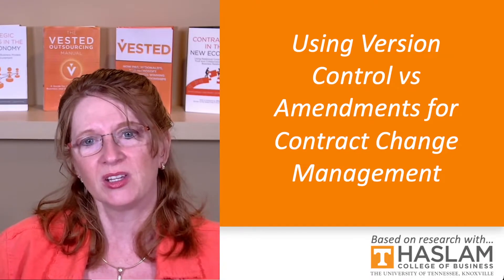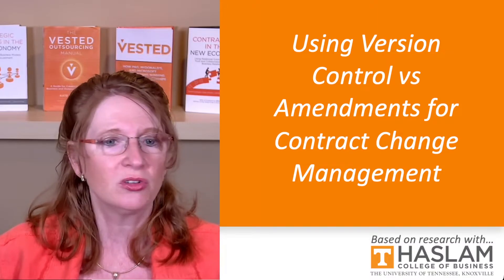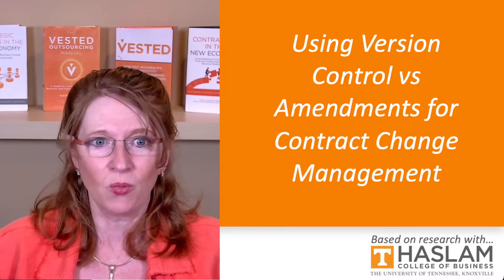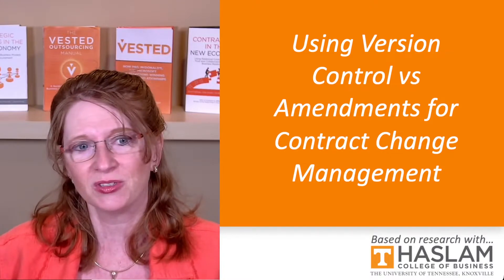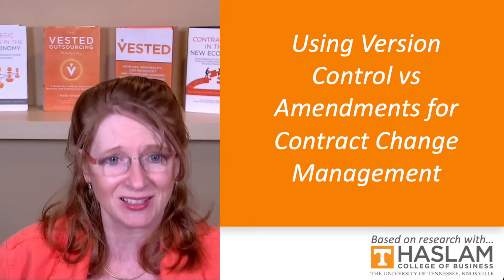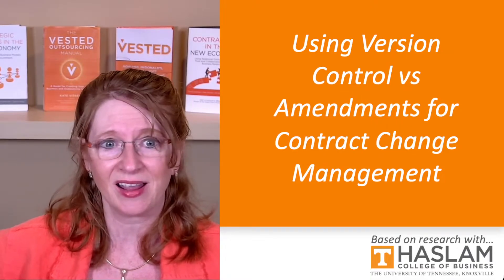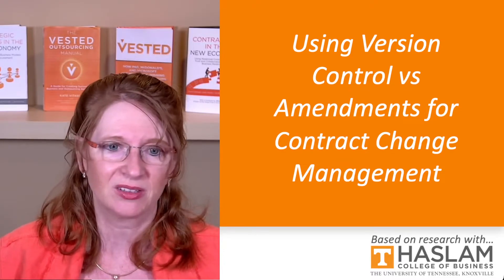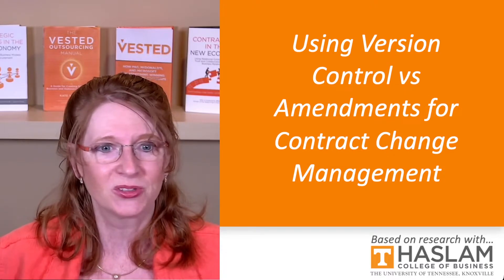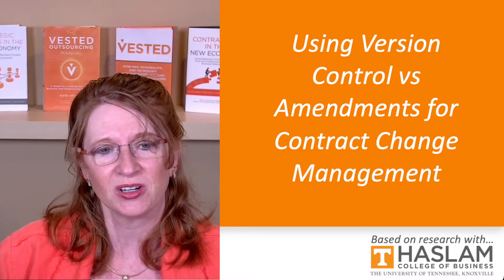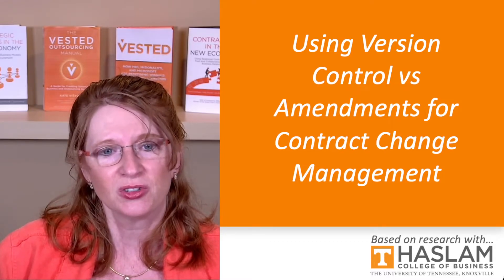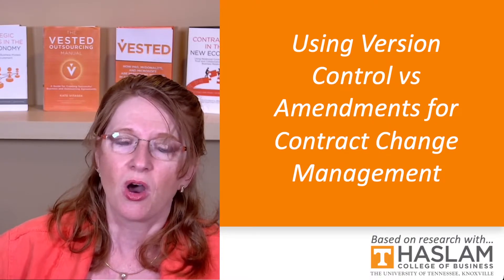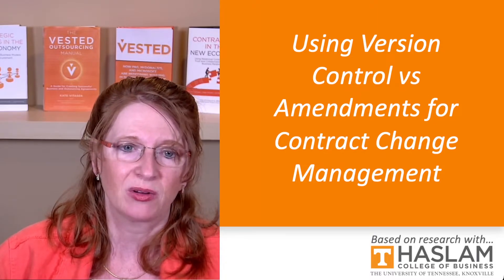A better approach is version control. You're used to doing this — it's what you do in business all day long. You have revision 1.1 and 1.2, and if it's significant, it goes to version number two. Some people date them, versioned as of a specific date. There are lots of great version control methods out there, so look up best practices within your organization. Using version control helps your organization always understand what the latest intent for that relationship is.